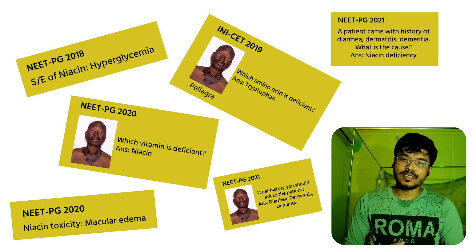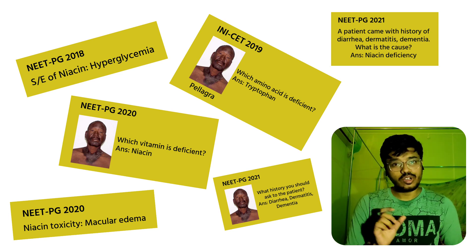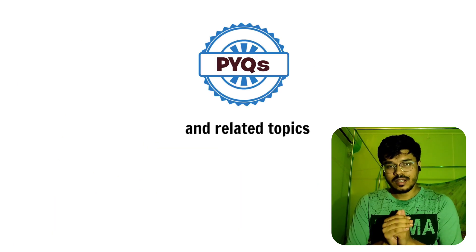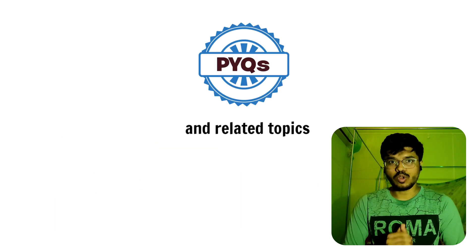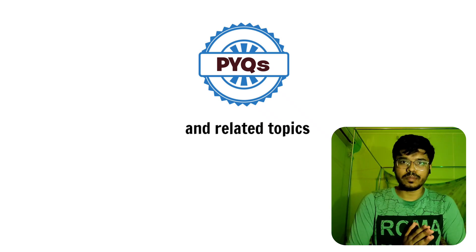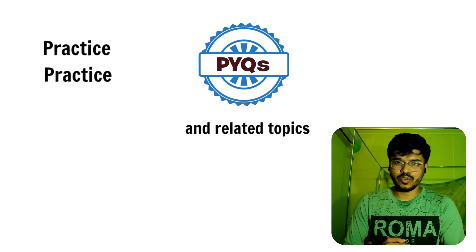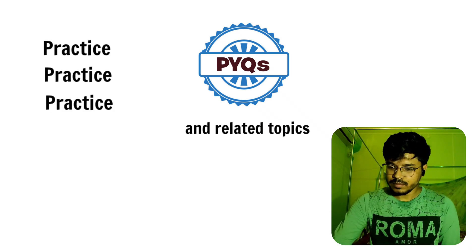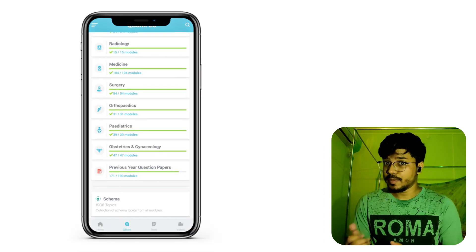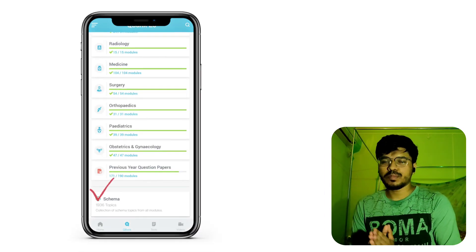So you have to be the master of previously asked questions — not only the questions, but also the topic. You have to thoroughly read the topics and memorize them. Practice the topics frequently. You can use the Schema section in the Marrow app. It is composed of previously asked topics.